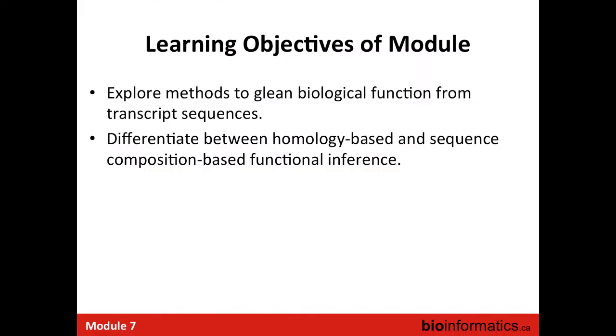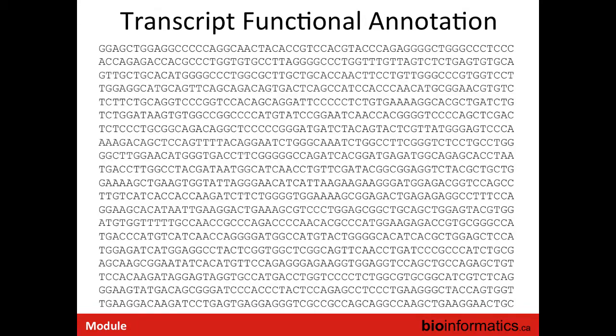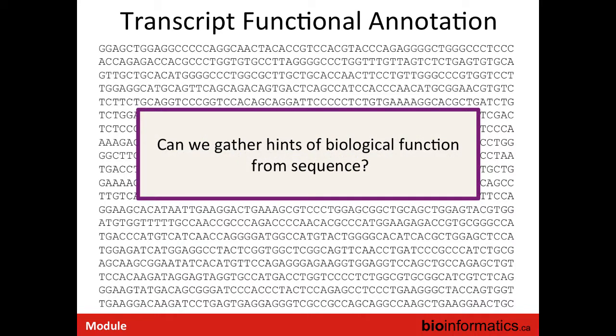We have a couple of objectives for this module. We're going to explore methods to glean biological function from transcript sequences, and we'll learn to differentiate between two different approaches: homology-based and sequence composition-based approaches to functional inference. The general challenge is that after transcript assembly, we've identified our different transcripts and have these sequences, but we don't necessarily know what they represent functionally or biologically. So can we gather hints of biological function by looking at the sequence data? There are a couple of key approaches we might take.